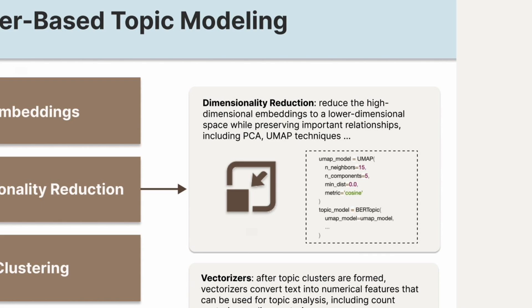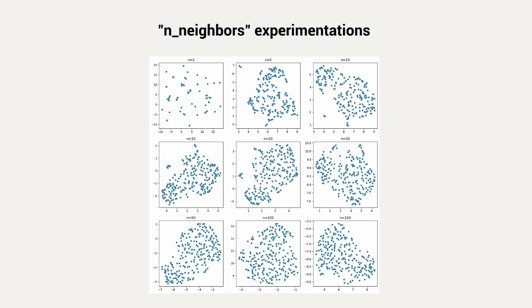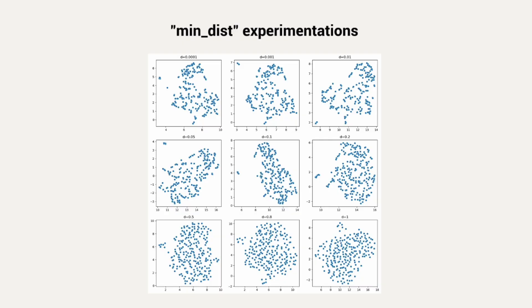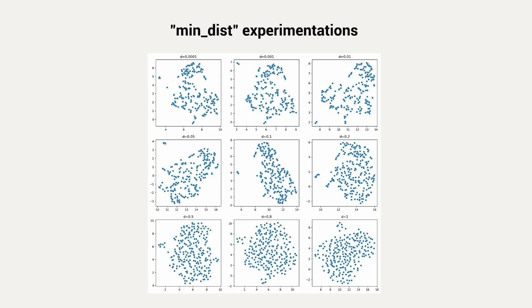An important UMAP parameter is nNeighbors, which controls how UMAP balances local versus global structure in the data. Looking at the visualization, when we use low values of nNeighbors, UMAP focuses more on local structure. As we increase nNeighbors towards 100 or 150, the points start forming more cohesive global patterns, identifying broader relationships among data points. The minDistance parameter determines how closely points can cluster together in the lower-dimensional space. A smaller minDistance allows points to pack tightly together, while a larger value spreads them more evenly, forming more circular patterns. Based on our hyperparameter tuning experiments, setting nNeighbors to 5 and minDistance to 0.01 gives the best results, creating distinct data clusters that are easier for the subsequent clustering model to process.